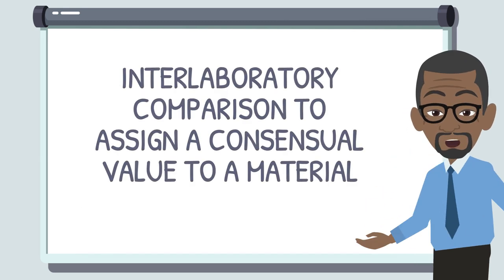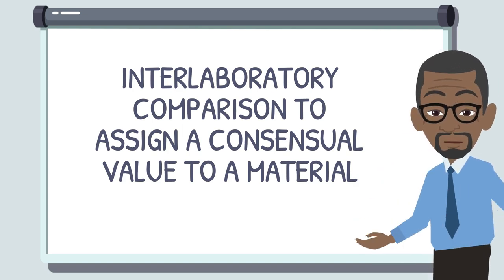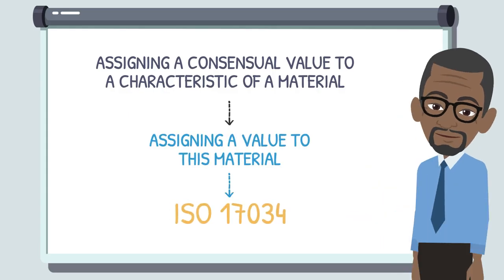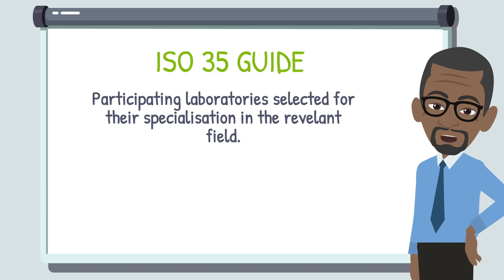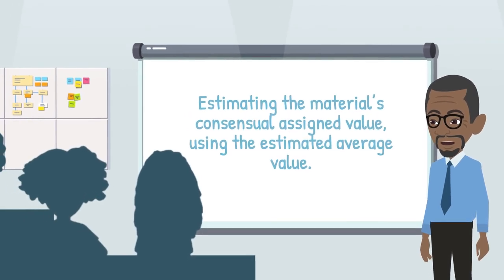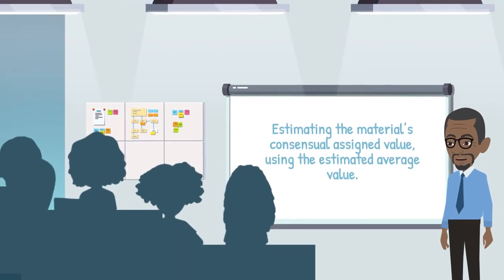Finally, if we wish to attribute a consensus value to a characteristic of a material, we will assign a value to this material. The associated standard is ISO 17034, General Requirements for the Competence of Reference Material Producers. This standard is backed up by a detailed ISO 35 guide. The participating laboratories are selected for their specialization in the relevant field. These laboratories obtain results on test items that are sufficiently homogeneous and stable. The purpose is to estimate the material's consensus-assigned value using the correctly estimated general mean.